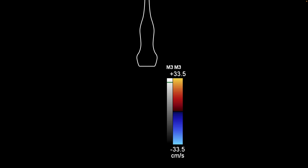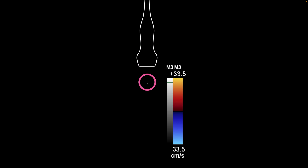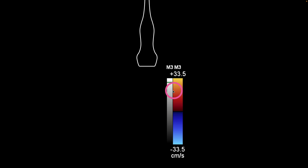Now with regards to the color itself, I don't want you to think about red as venous or arterial. It all has to do with the relation to the transducer itself. Anything moving away from the transducer is going to be blue, and anything moving towards the transducer is going to be red.